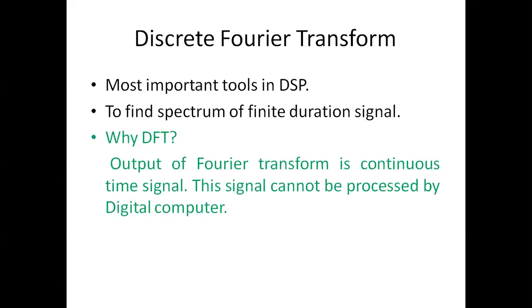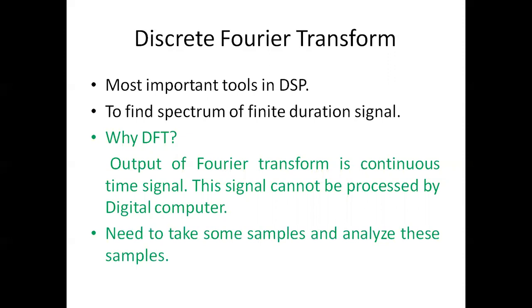The output of the Fourier transform is a continuous time signal. This signal cannot be processed by a digital computer — the digital computer cannot work with a continuous time signal. We need to take some samples of x(t) and analyze the samples instead of the original signal.